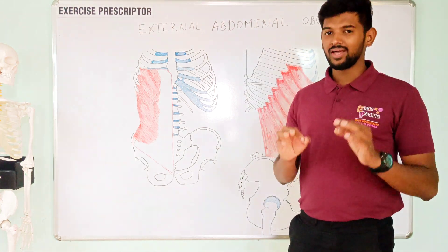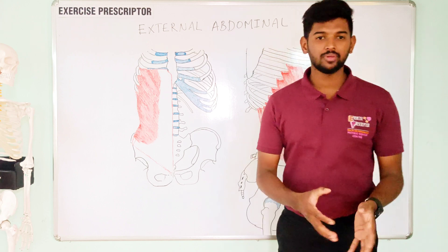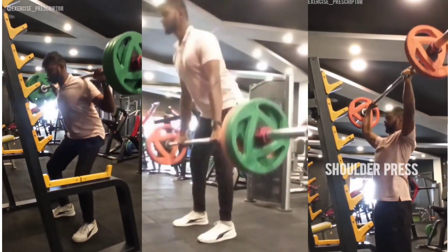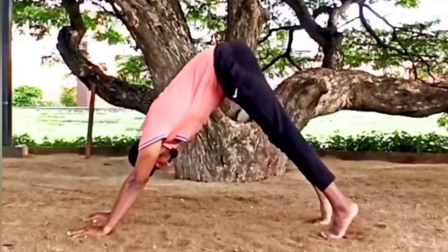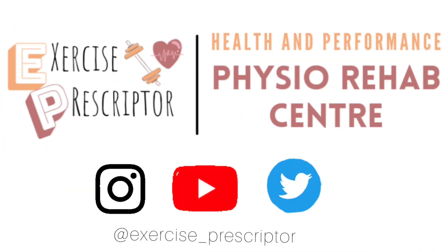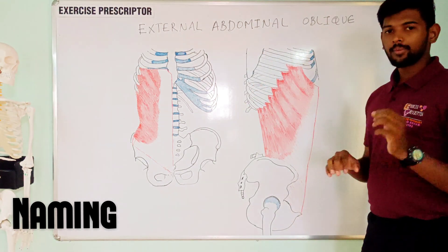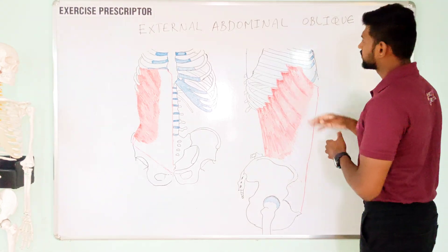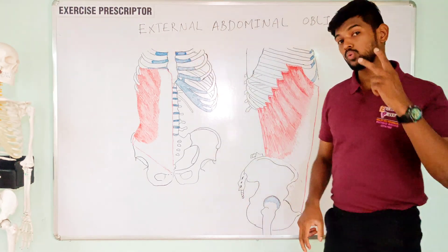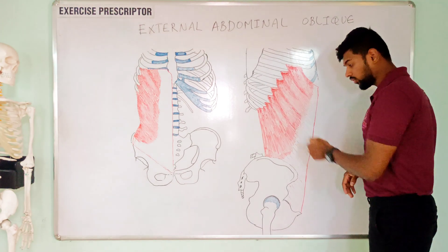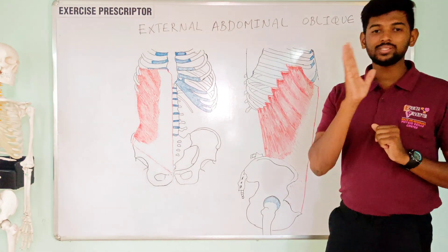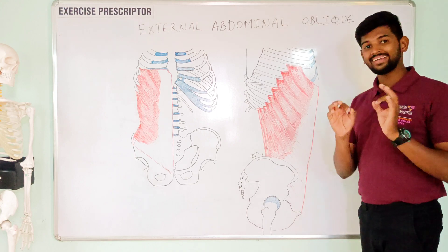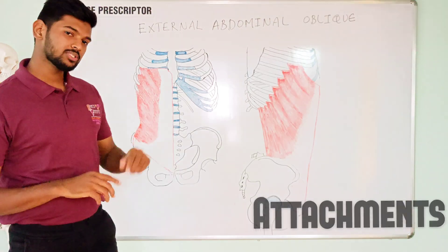Hi everyone, today we are going to learn and understand the complete anatomical behavior of the external abdominal oblique muscle. This muscle is called external abdominal oblique because it is presented over the abdominal region with fibers oriented in an oblique direction. There are two muscles in the abdominal region oriented obliquely — one presented outside called external abdominal oblique, and one inside called internal abdominal oblique.